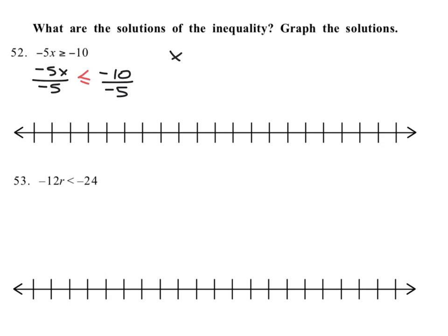The inequality is flipped and stays flipped, and what you get is x ≤ 2. So on the number line — zero, two, four, five, seven, eight, nine, ten, negative one through negative five — x equals two, so we've got an endpoint at two.